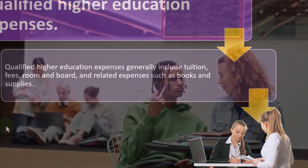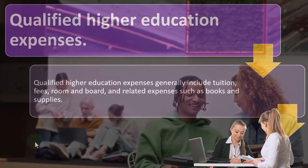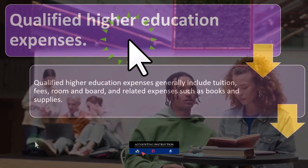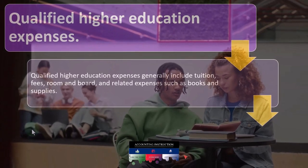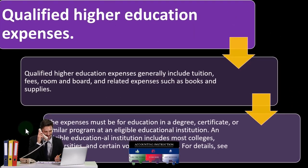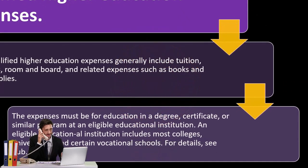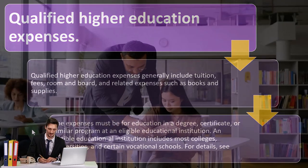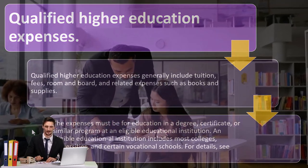Qualified higher education expenses generally include tuition, fees, room and board, and related expenses such as books and supplies. That's what you need to spend the money on for the loan to be a legitimate loan. When we talk about these education provisions, there are different areas — the Hope credit, qualified tuition programs — and sometimes the rules about what you need to spend money on to qualify are different depending on whether you're talking about student loan interest versus a grant or the Hope and Lifetime learning credits.